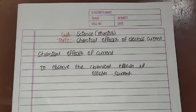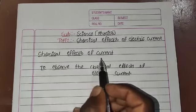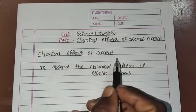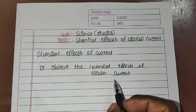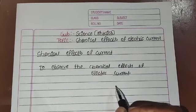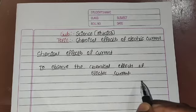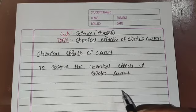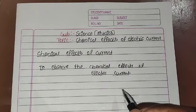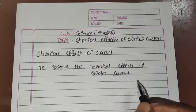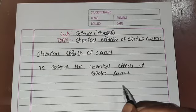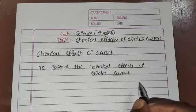Good morning students. In the previous class, we learnt about the electricity conduction through liquids. In this class, we shall learn about the chemical effects of electric current. From the previous activity, we observed that distilled water does not conduct electricity. When we added salt to it, it began to conduct electricity, which means when we add a chemical substance to a non-electrolyte, it begins to conduct electricity.